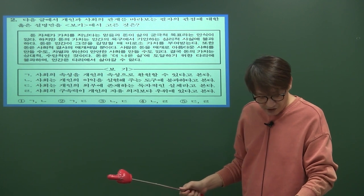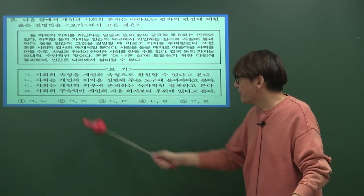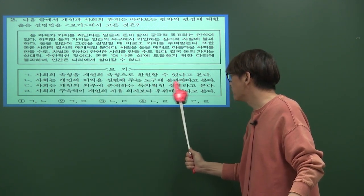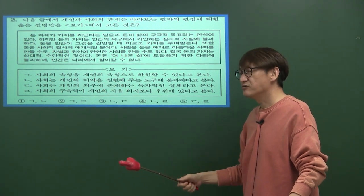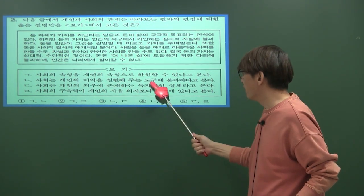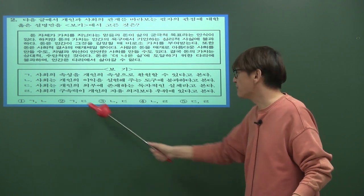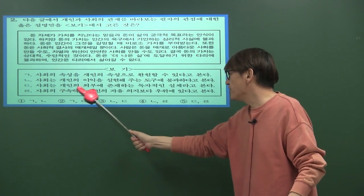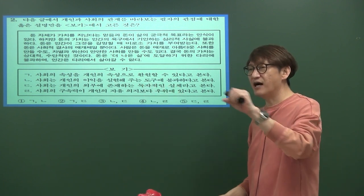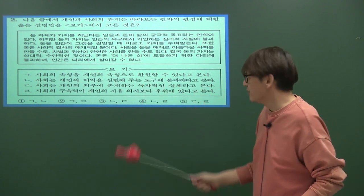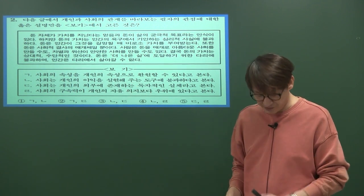사회 명목론의 특징으로는 '사회의 속성을 개인의 속성으로 환원할 수 있다고 본다'와 '사회는 개인의 이익을 실현해주는 도구에 불과하다'가 있으며 이것이 사회 명목론입니다. 반면 디귿과 리을에서 '개인의 외부에 존재하는 독자적인 실체', 즉 사회를 하나의 존재로 보기 때문에 이것은 사회 실재론이 됩니다.